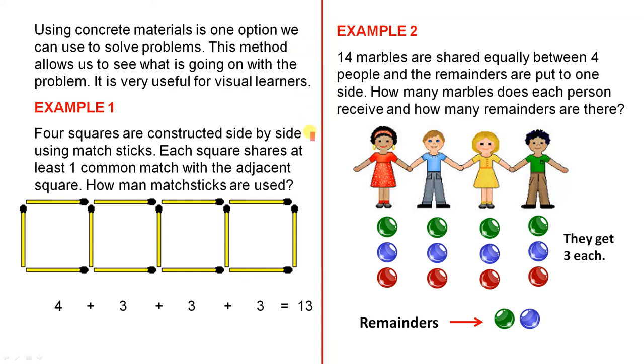Example 1. Four squares are constructed side by side using matchsticks. Each square shares at least one common match with the adjacent square. How many matchsticks are used? So here's our first square here, obviously with four matchsticks. And then the next square here shares this matchstick here, and it also shares this matchstick with that square. So that's what we mean by each square shares at least one common match.